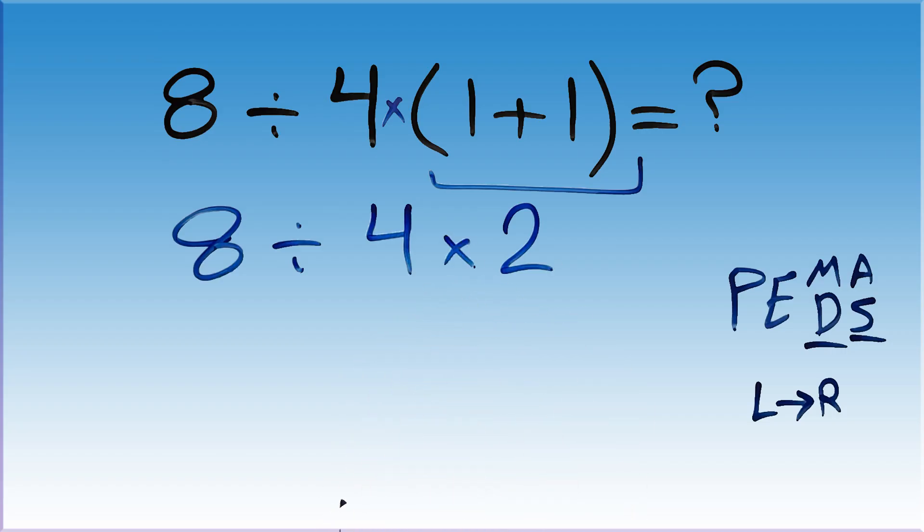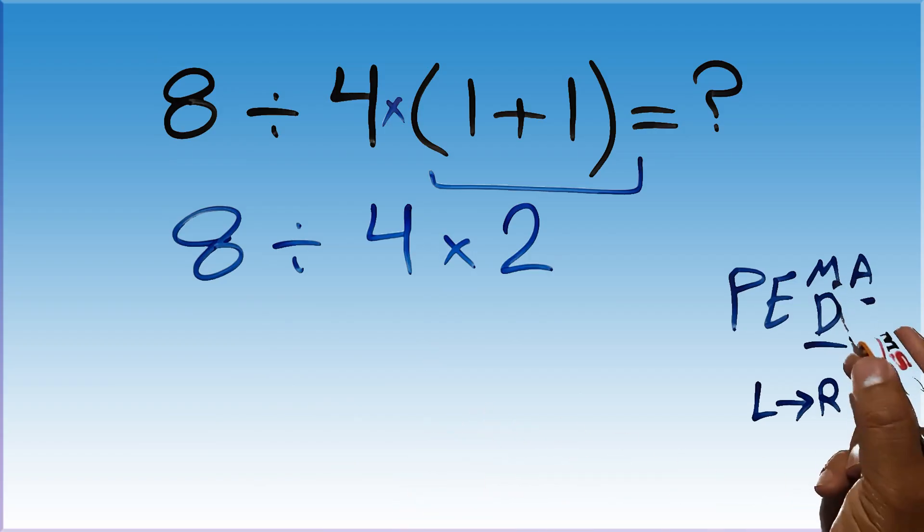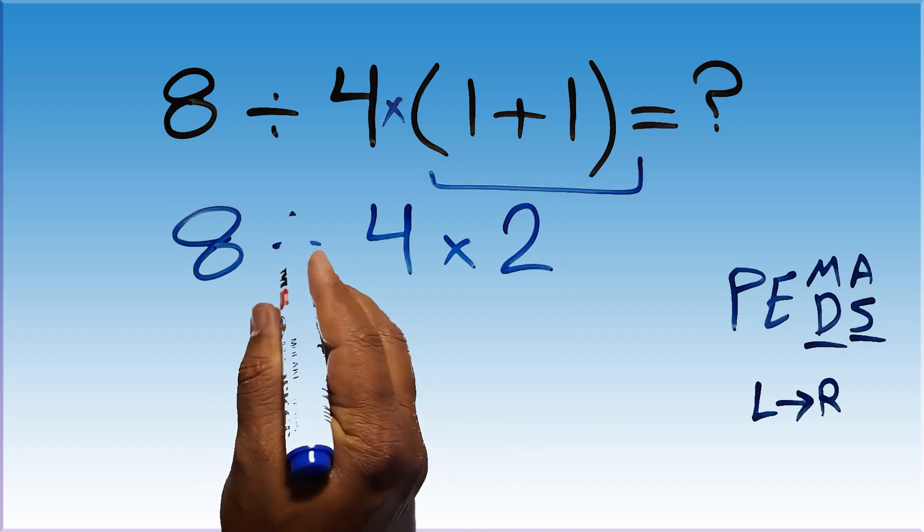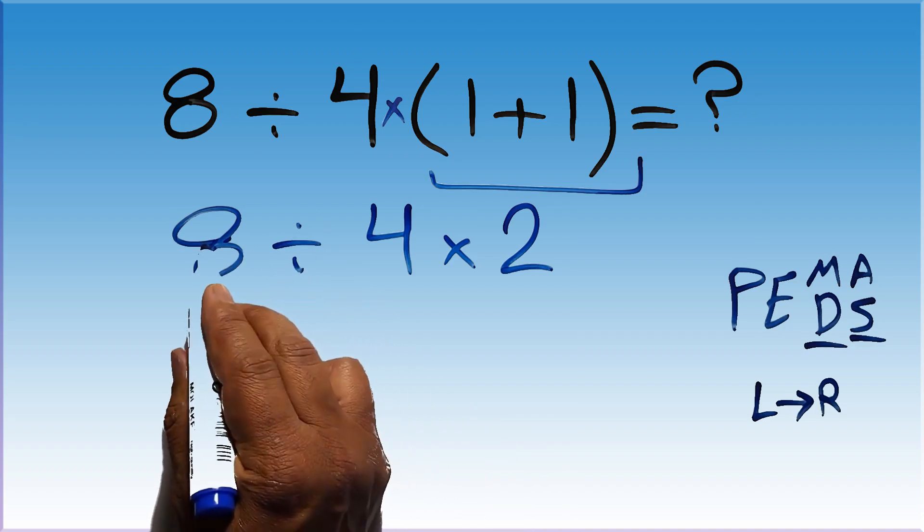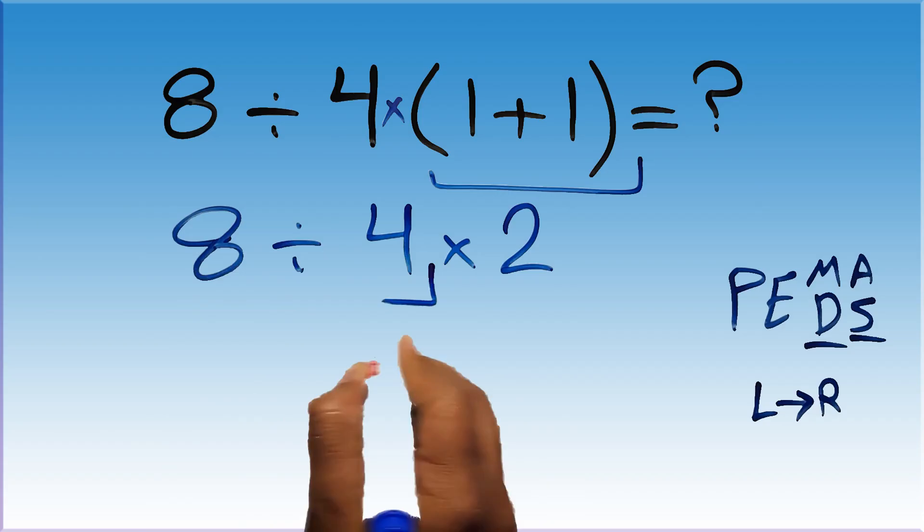Now we have 1 division and 1 multiplication. As I said, multiplication and division have equal priority and we have to work from left to right. So here first we have to do this division. 8 divided by 4 gives us 2.